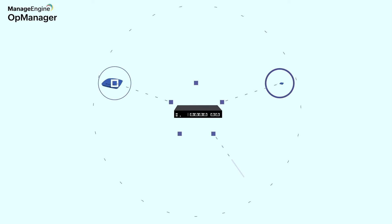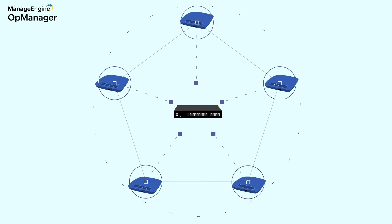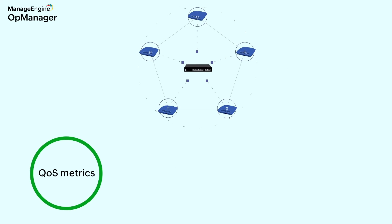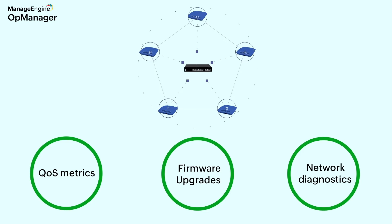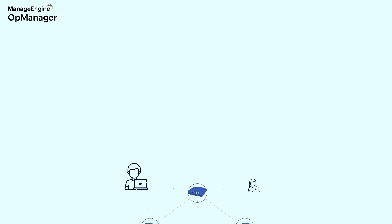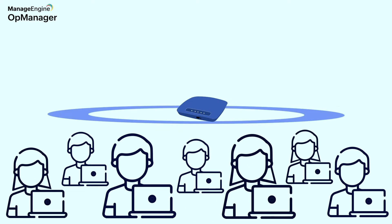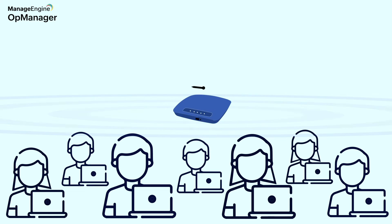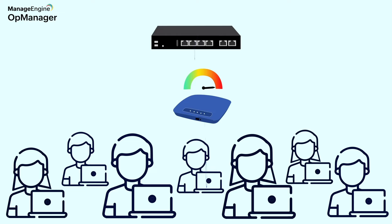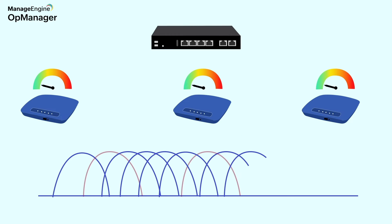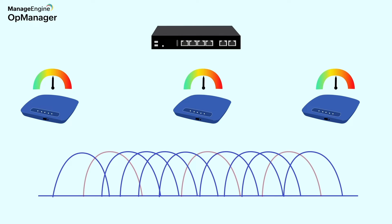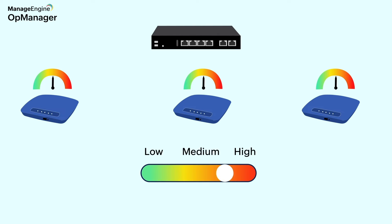A single WLC can manage multiple access points. Whether it's QoS metrics, firmware upgrades, or network diagnostics, you can perform tasks centrally rather than repeating them for each access point. When too many users are connected to an access point, WLCs can spread the load to other lightly loaded access points. They can scan bandwidths and switch to less crowded Wi-Fi channels, and they can also manage access point power levels to prevent signal overlapping.